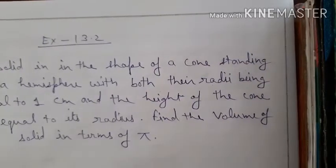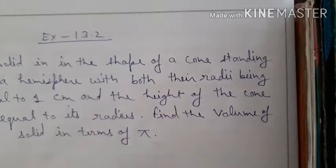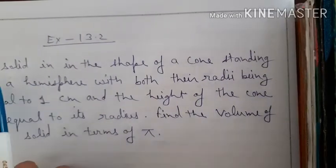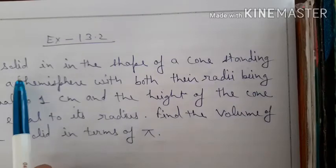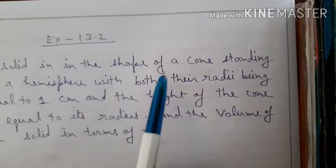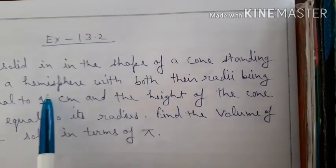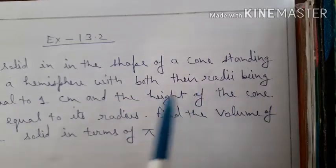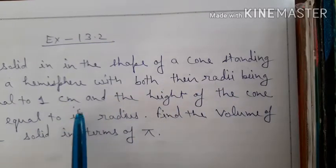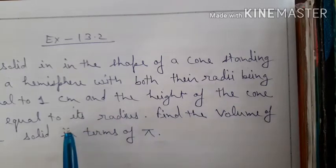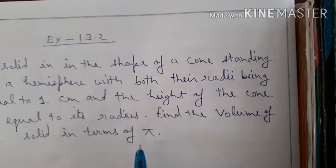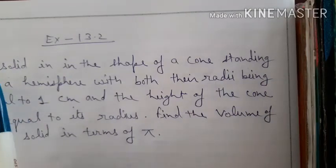Today we start Exercise 13.2, Question number 1. In question number 1, a solid is in the shape of a cone standing on a hemisphere with both their radii being equal to 1 centimeter, and the height of the cone is equal to its radius. Find the volume of the solid in terms of pi.